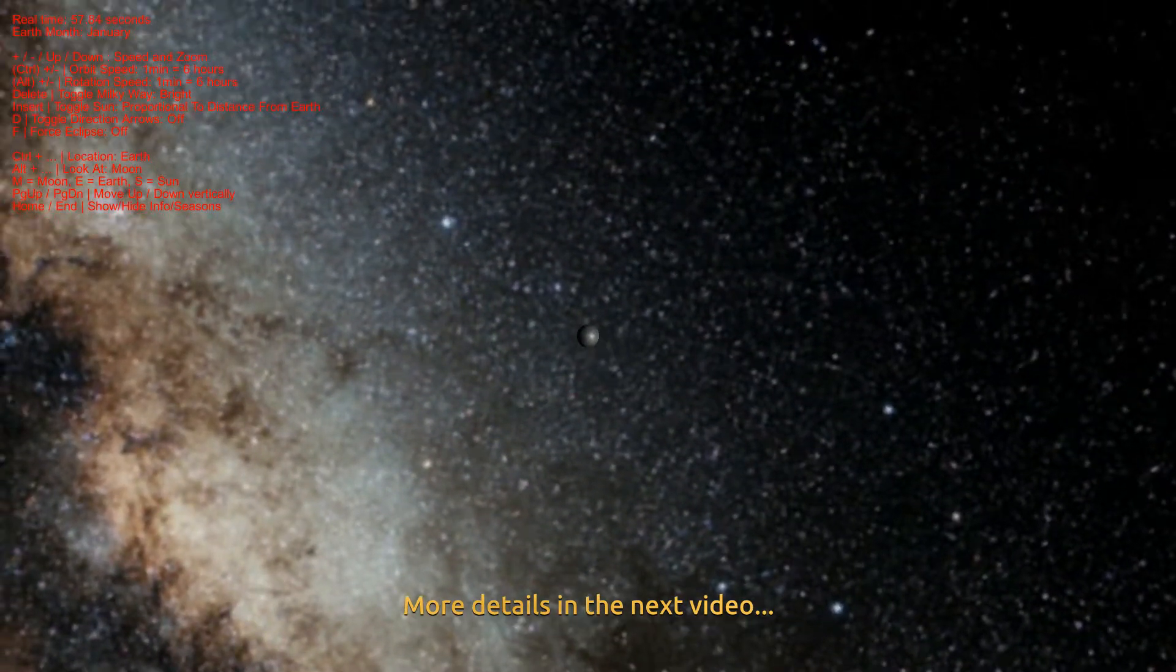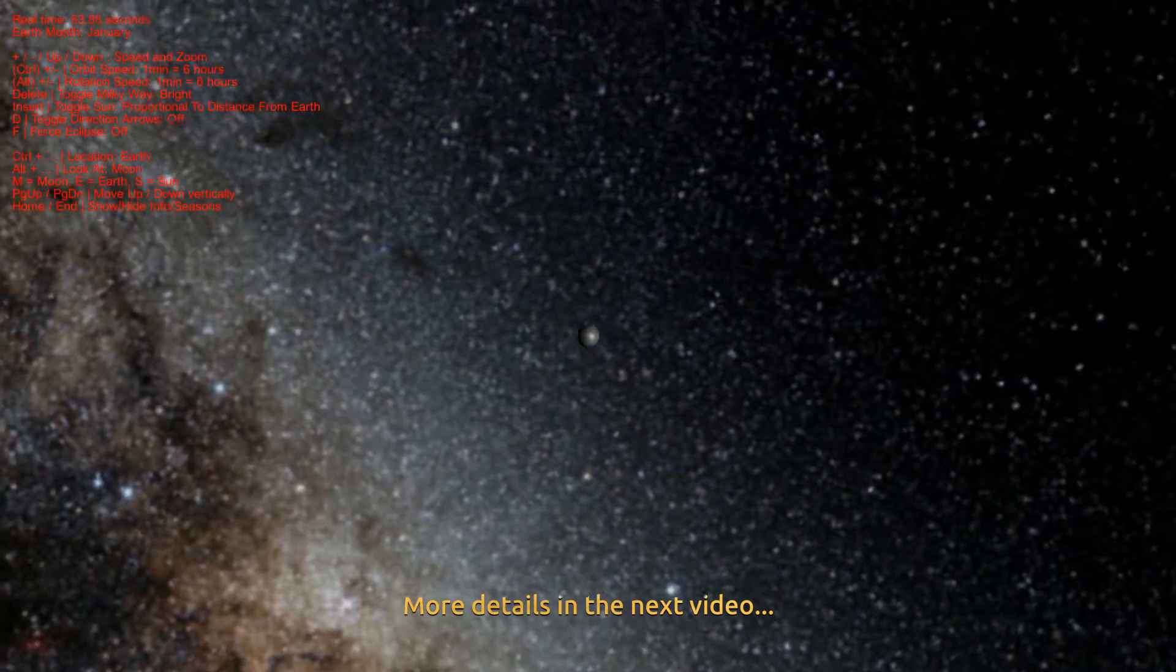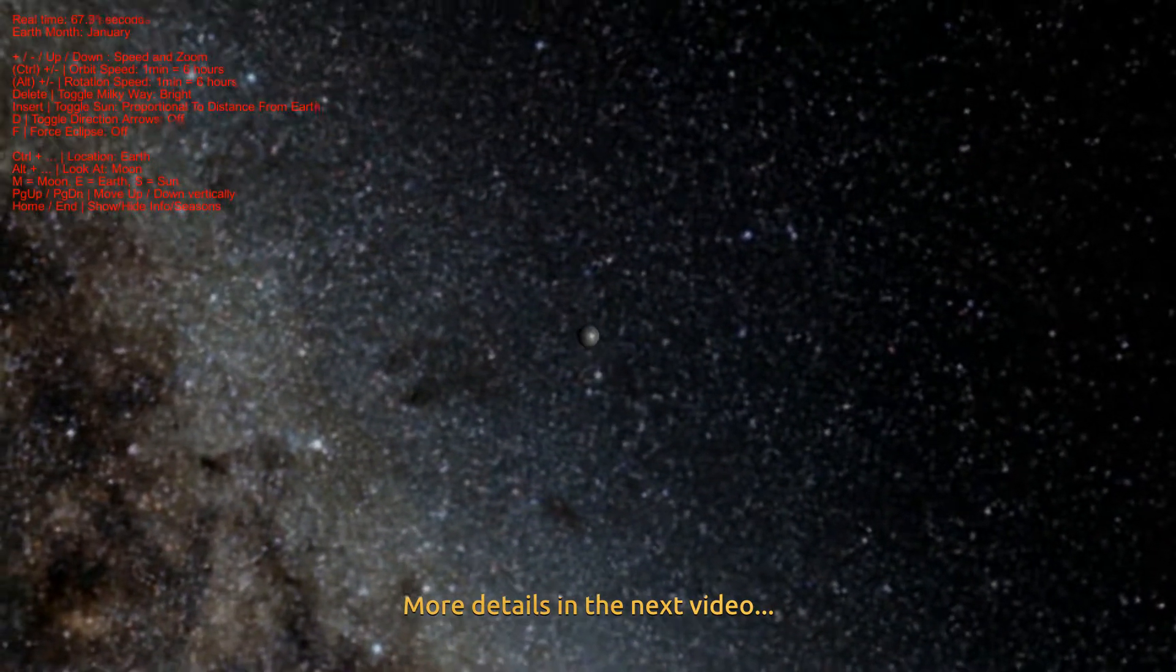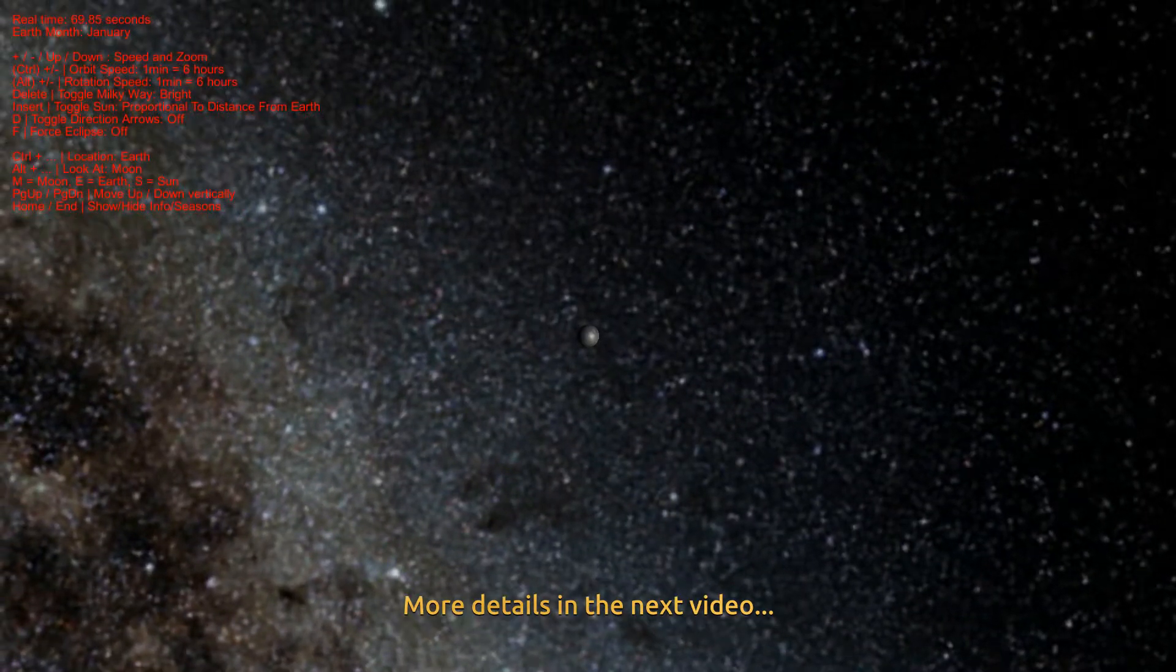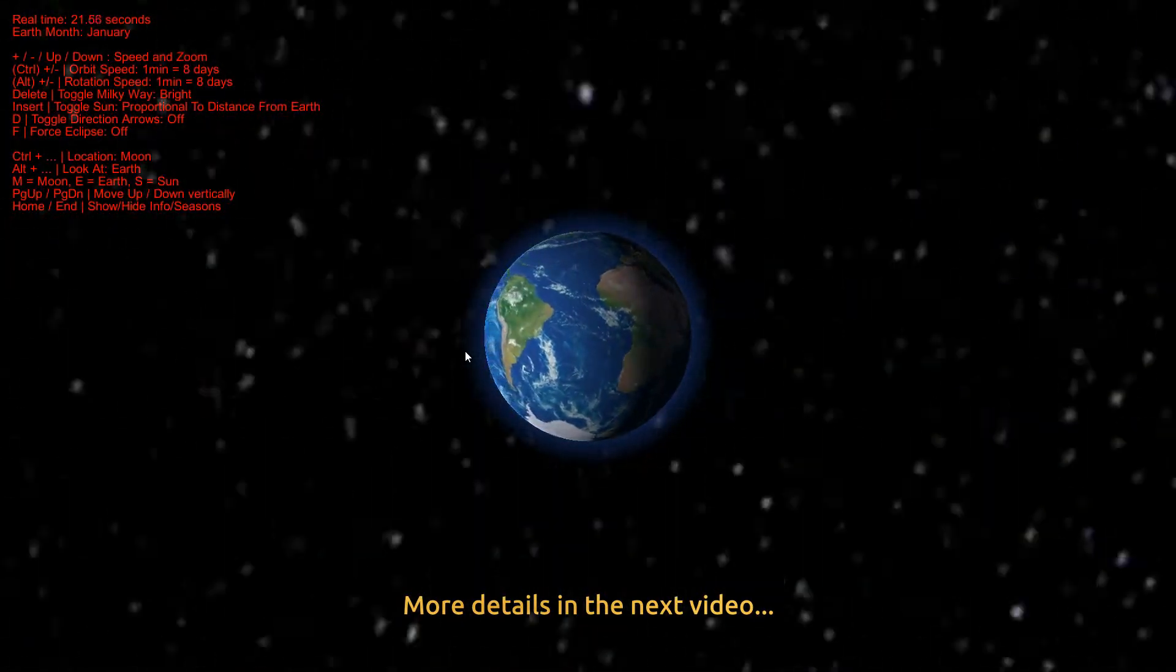In the next few videos, we will consider in more detail the moon's orbit around Earth, why we can only ever see one side of the moon from Earth, how much the moon moves further and closer to Earth over time, the tilt of the moon and the Earth, why seasons happen on Earth, and why the poles experience such long periods of day and night.